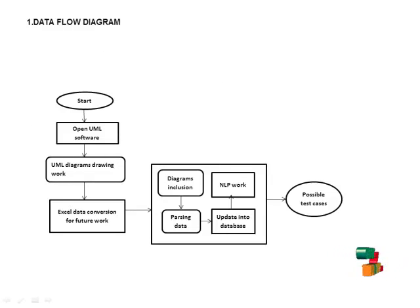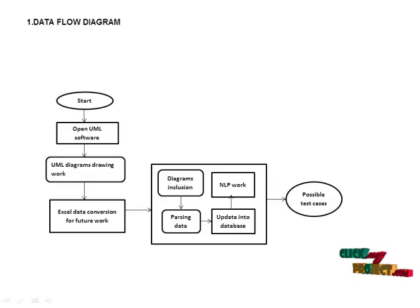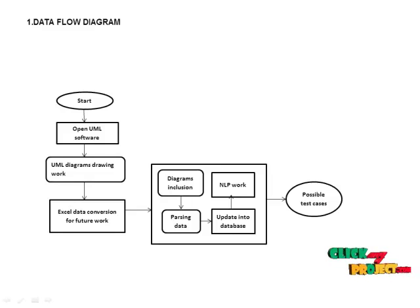Looking at the data flow diagram: first we start our process, then open the UML software, then go to the UML diagram drawing. Another step is Excel data converted into future works. Then we go to diagram inclusion when adding the diagrams. Then go to parsing data, which is updated into the data. Then go to NLP worker, then to parsing data, and finally to the test cases.